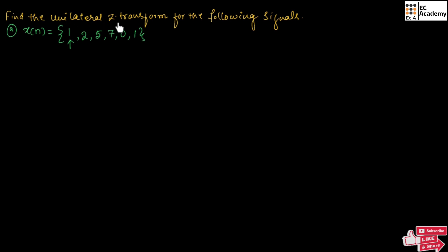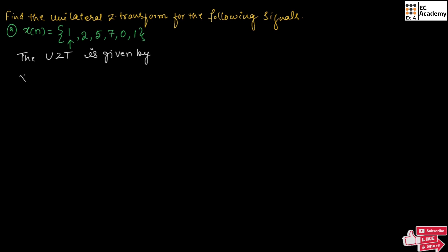Here we need to find the unilateral Z transform for the given signal x of n. In this sequence, the arrow mark specifies this value is for n equal to 0, so values extend for n equal to 1, 2, 3, and so on. x of n exists for n greater than or equal to 0 — we have this sequence for non-negative values of n, which is why we can find the unilateral Z transform. The unilateral Z transform is given by X of z equal to summation from n equal to 0 to infinity of x of n times z to the power of minus n.